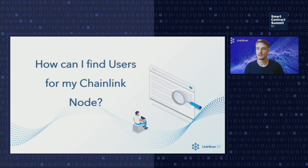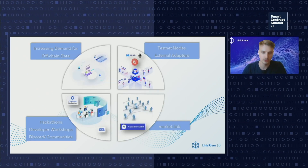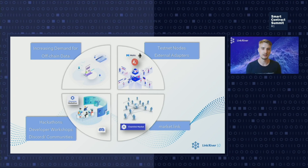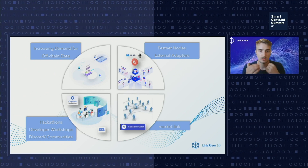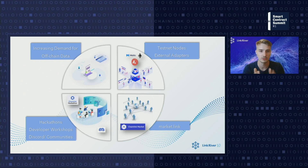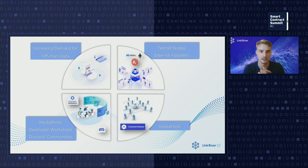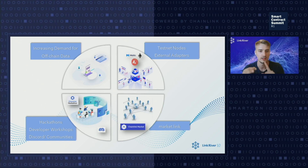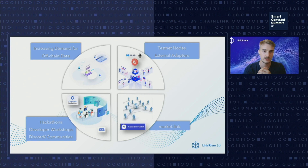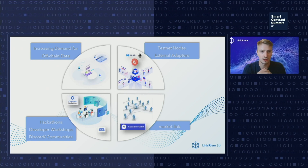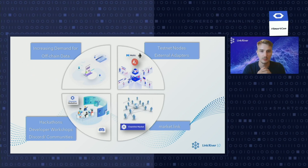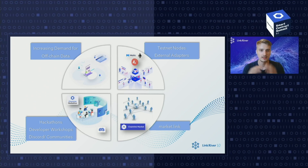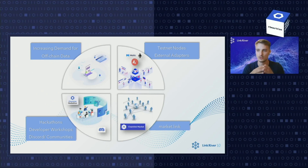The next logical follow-up question is: how can I find users for my Chainlink node? There's an increasing number of smart contract developers and decentralized applications creating demand for real-world data needed on-chain. Running nodes on testnets can be really beneficial if you add jobs to them and host external adapters, as development teams tend to develop their products on testnet before launching on mainnet. Active participation in hackathons, developer workshops, and technical debates on Discord or other communities can be really helpful. Also, make sure to list your Chainlink node on the Chainlink Market, where you can add jobs and external adapters.